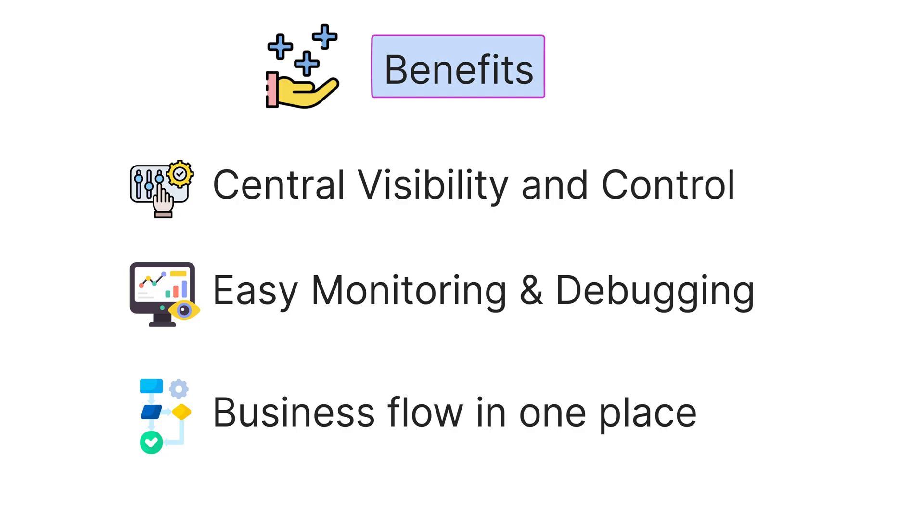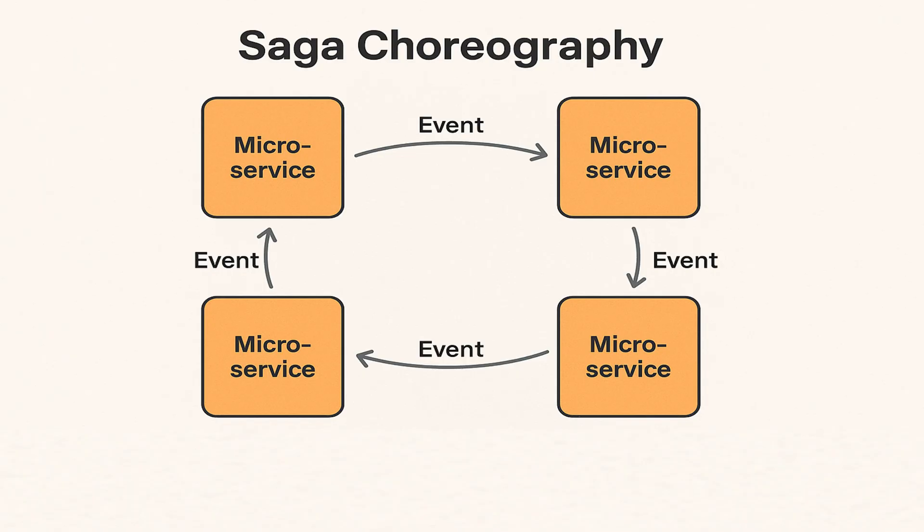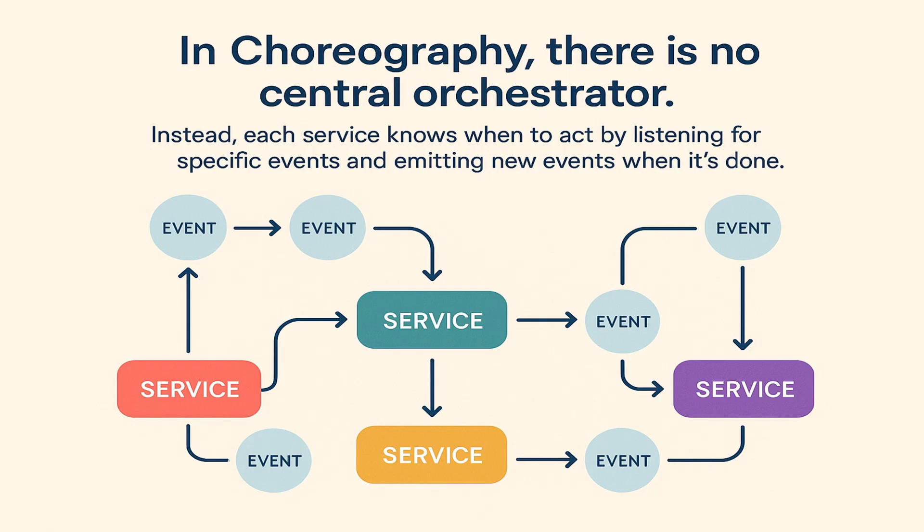Now let's move to the other approach: Saga choreography. It is the most widely adopted approach in microservices architecture because it removes the need for a central controller and adopts event-driven communication. Event-driven communication means services are not communicating synchronously — they just emit events and listen to events. In choreography, there is no central orchestrator. Instead, each service knows when to act by listening to specific events and emitting new events when it's done.